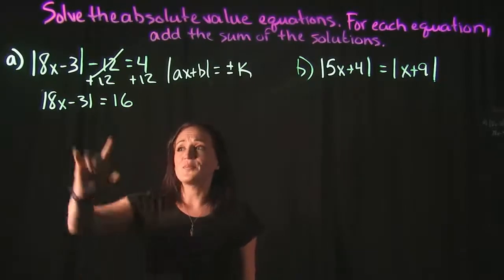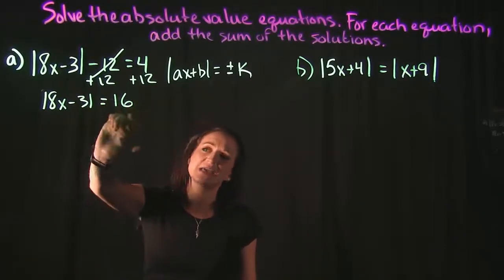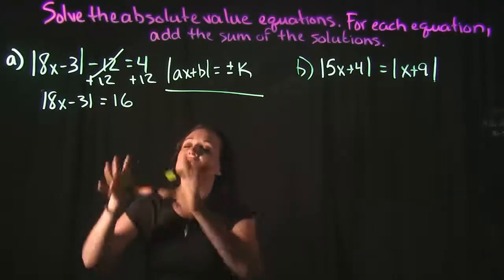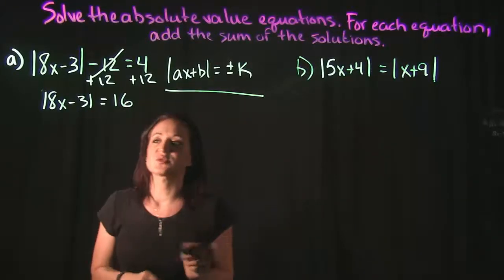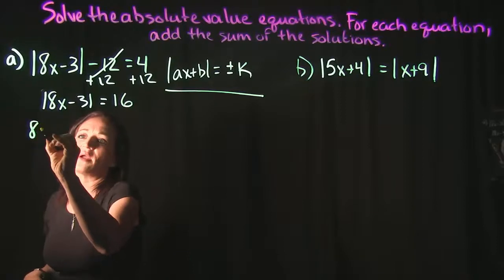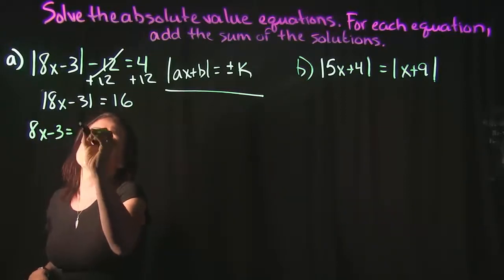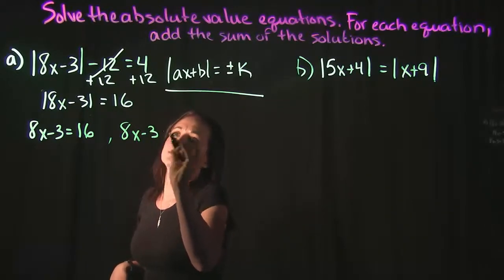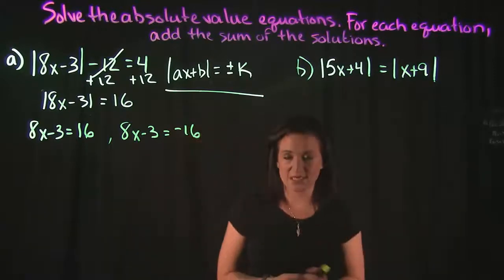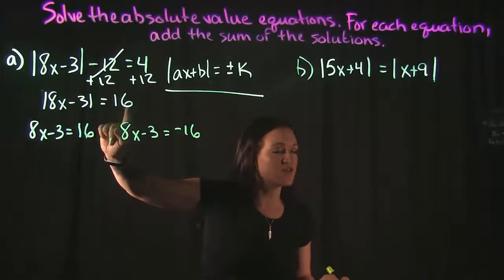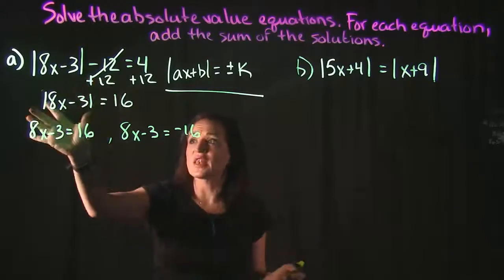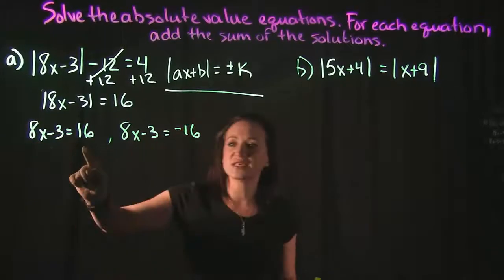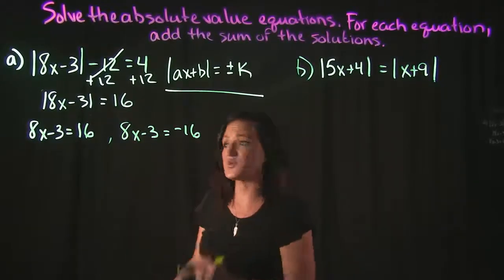Now that I have the absolute value completely by itself on one side set equal to my constant, I'm going to use the rule to split it into two different equations. I'm going to take 8x minus 3 and set it equal to positive 16, and then take the same 8x minus 3 and set it equal to negative 16 — the positive and negative version. The left side always stays the same.